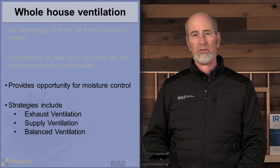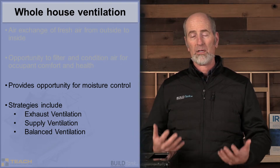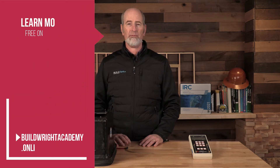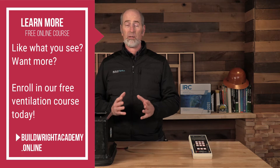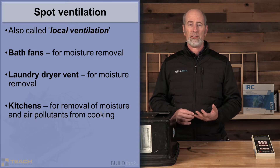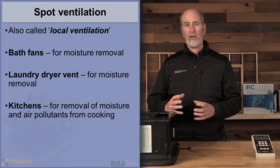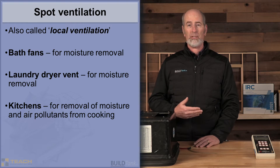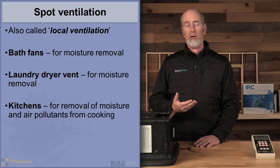When talking about the different strategies to ventilate a house in the whole house concept, you can use exhaust ventilation, supply ventilation, or balanced ventilation strategies. Regardless of which whole house controlled mechanical ventilation system you install, you also have to have spot ventilation systems. Spot ventilation is sometimes called local ventilation, and those are locations like bathrooms, laundries, and kitchens, where you're trying to remove pollutants from the house as soon as they're produced — primarily moisture in bathrooms and laundries, and cooking byproducts in kitchens.